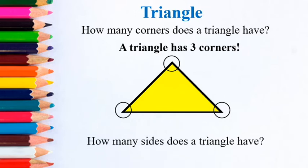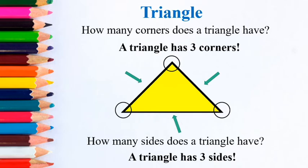And how many sides does a triangle have? Let's count again — one, two, three. So a triangle has three sides. A triangle has three corners and three sides.